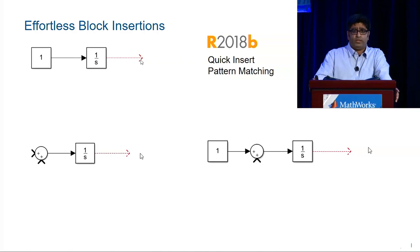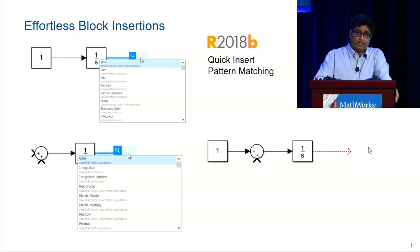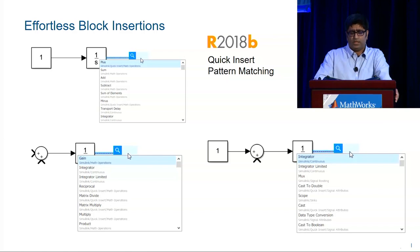When I invoke quick insert for the first one, I see plus and sum as the first two choices. When I do the same for the second one, I get gain and integrator as the top two choices. And for the third one, I see the two integrators as the top two choices.